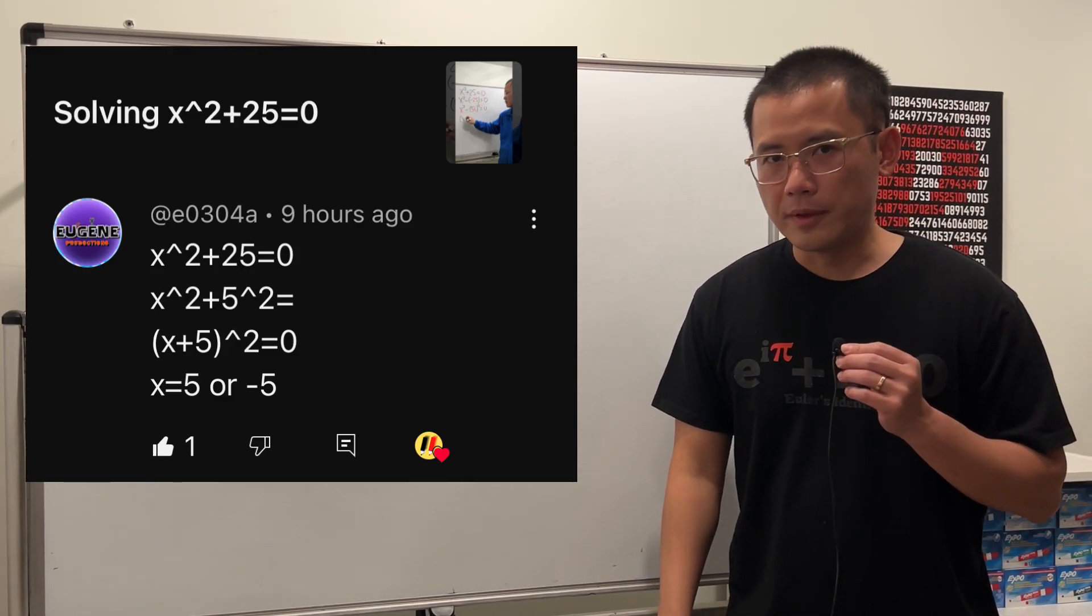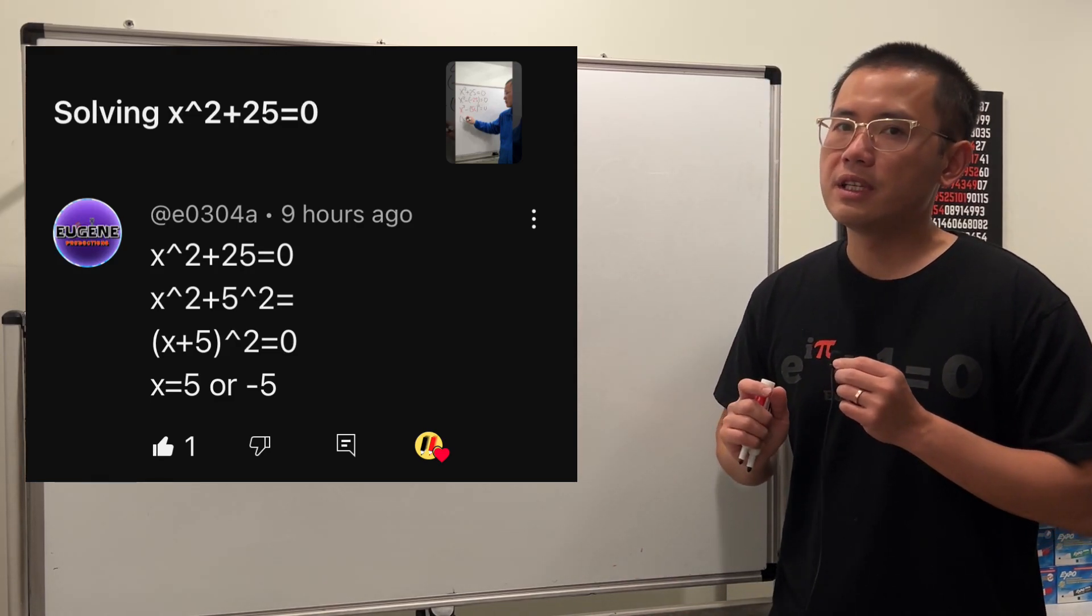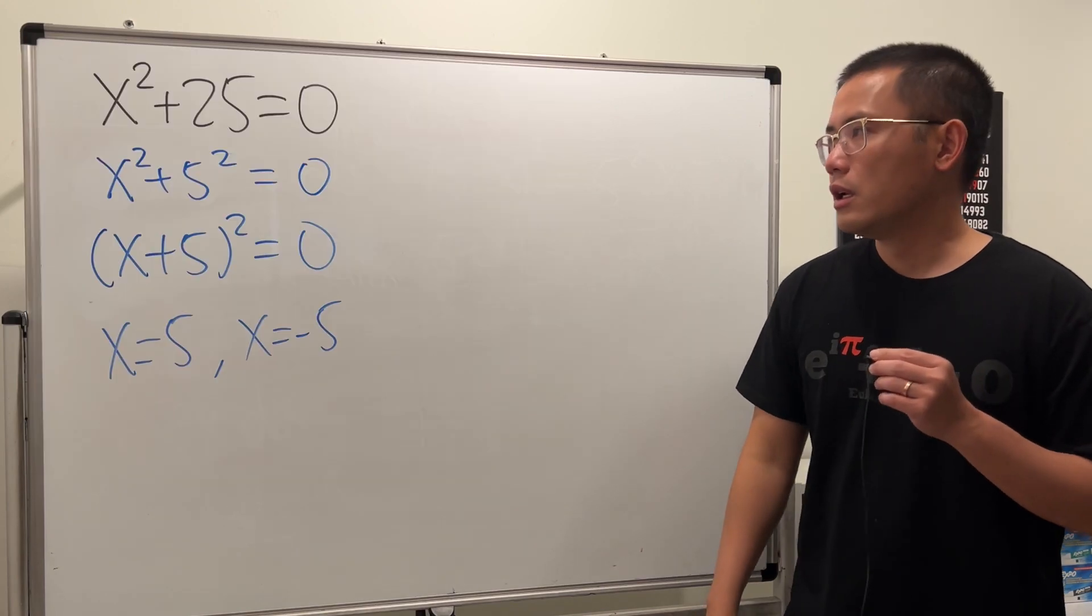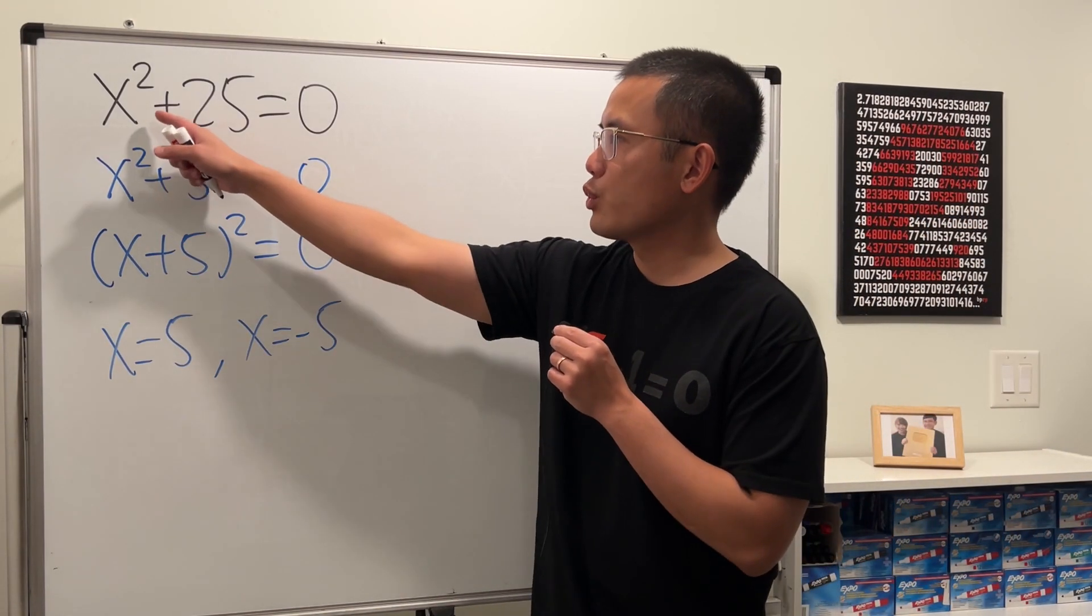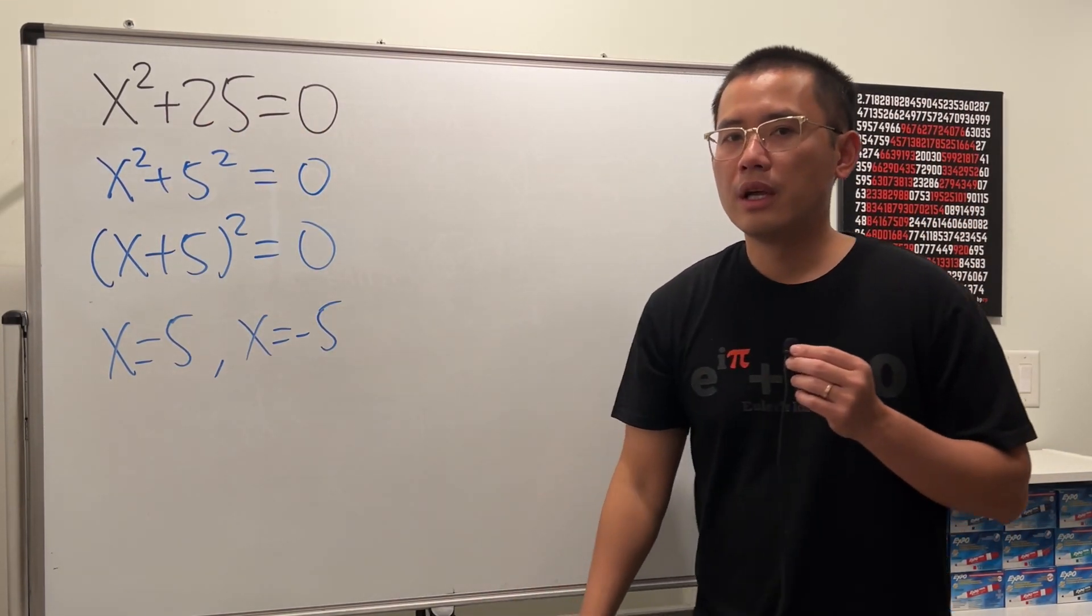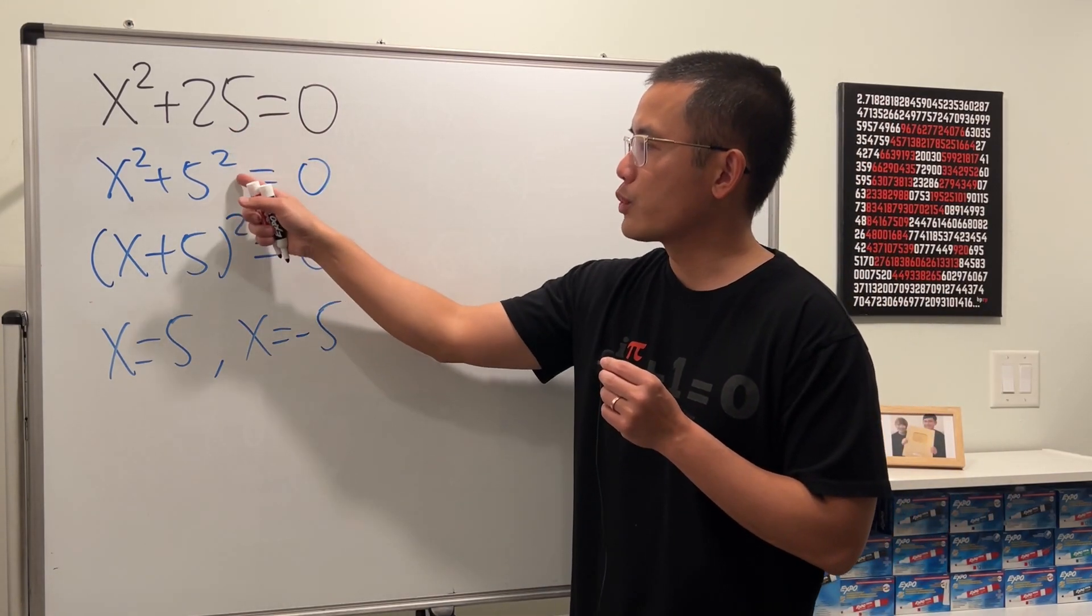I just saw this comment on one of my videos, and I think it's a really common mistake, so I would like to address that. Here we are trying to solve the equation x² + 25 = 0, and we see that 25 is equal to 5².